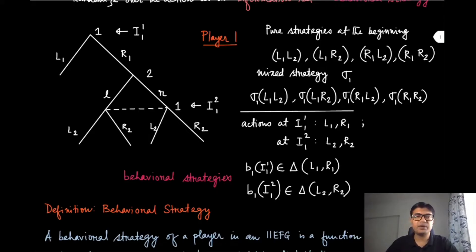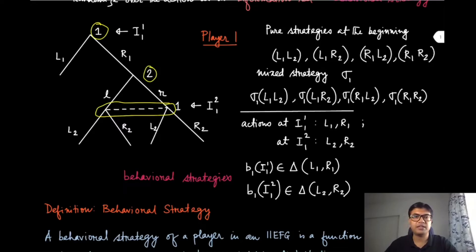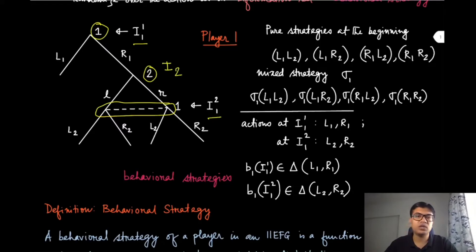Let us look at this example on the left hand side. Here we have two players. Player one is playing at the root and also at this information set at the third level, and in between, player two makes another move. We denote the first information set for player one as i11 and the second information set as i12. Similarly, player two has only one information set, represented as i21.